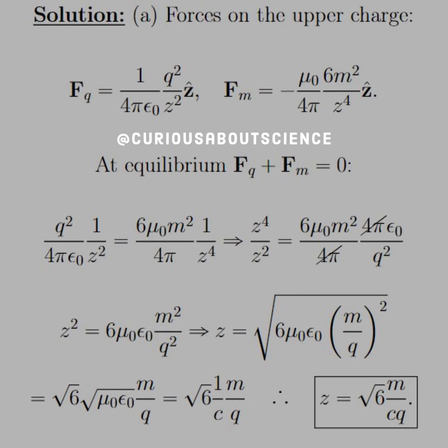Since they add to zero, we have a negative sign, so push the FM over, and multiply by z to the fourth, and then divide by Q squared over 4 pi epsilon naught. We see we get a nice set of canceling factors. And we end up with this coefficient of 6 mu naught epsilon naught, M squared over Q squared,